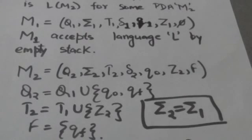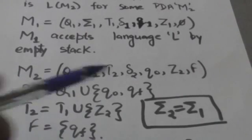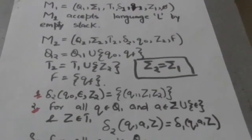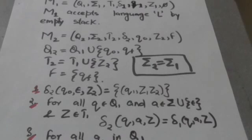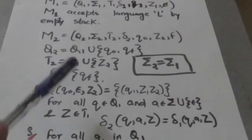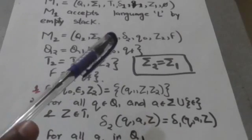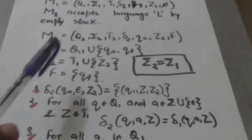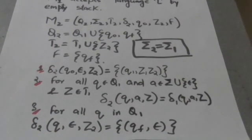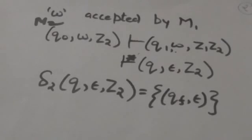Input symbols in both M1 and M2 remain the same. Now let us look at the transitions of pushdown automata M2. There is an empty move in M2 by which M2 jumps from its initial configuration to the initial configuration of pushdown automata M1 without reading any input symbol. Then all transitions of M1 are included in M2.